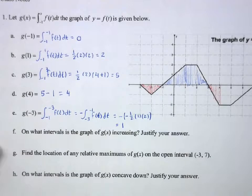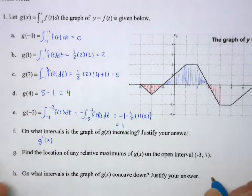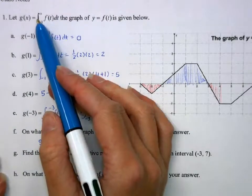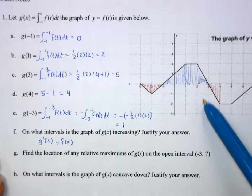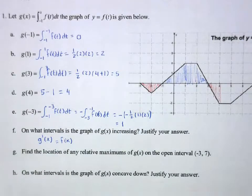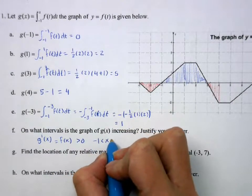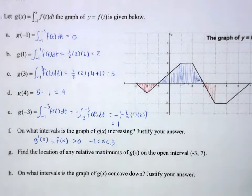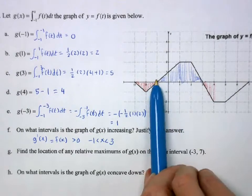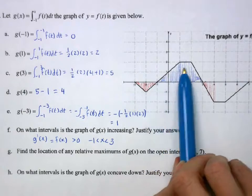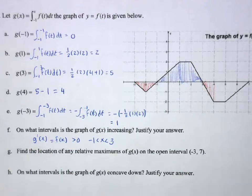On what intervals is g increasing? We want g prime of x. Using the Fundamental Theorem, g prime of x equals f of x. So we have the graph of the derivative. Where is f of x greater than 0? From negative 1 to positive 3. As we go in that direction, we're adding on positive area, so g is increasing. Our justification: g prime is greater than 0.